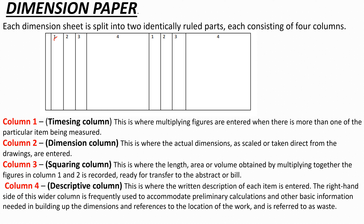For example, if you have two windows, you will write two times. In the timesing column, we don't use a multiplication sign but a stroke — you write the number of times you want to multiply, then a stroke. The second column is called the dimension column — this is where we enter the dimensions after lifting them from the drawings.